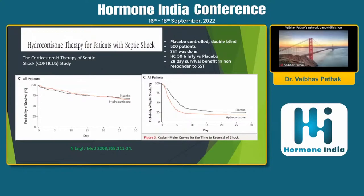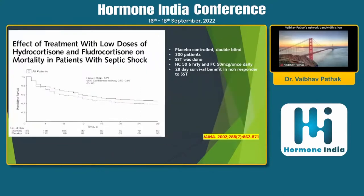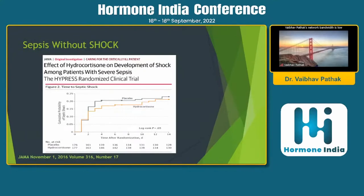So mortality benefit is conflicting across these two studies — one showing benefit, one not. Regarding sepsis without shock, there is clear consensus that there is probably no role for hydrocortisone. This was proven by a study comparing hydrocortisone versus placebo where time to onset of shock showed no difference. So in severe sepsis without shock, there is no role for hydrocortisone.